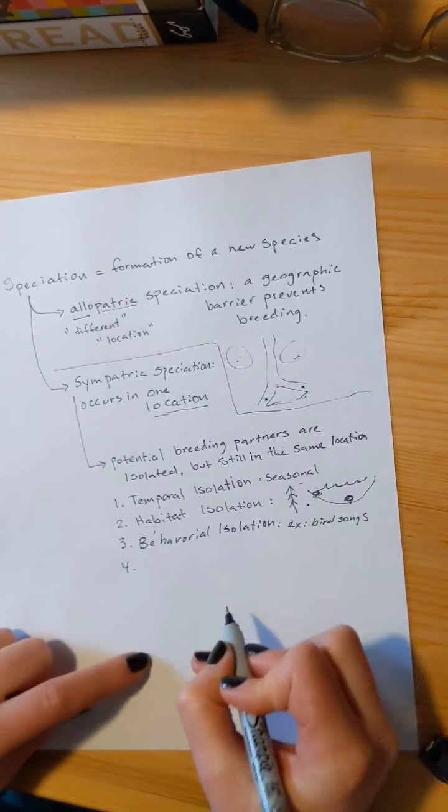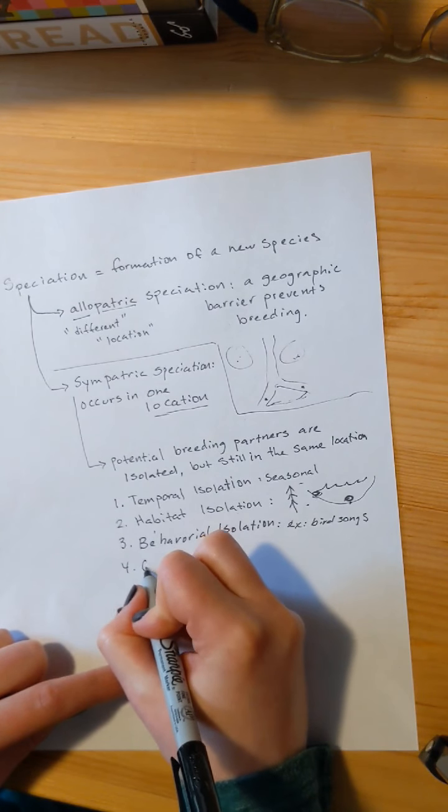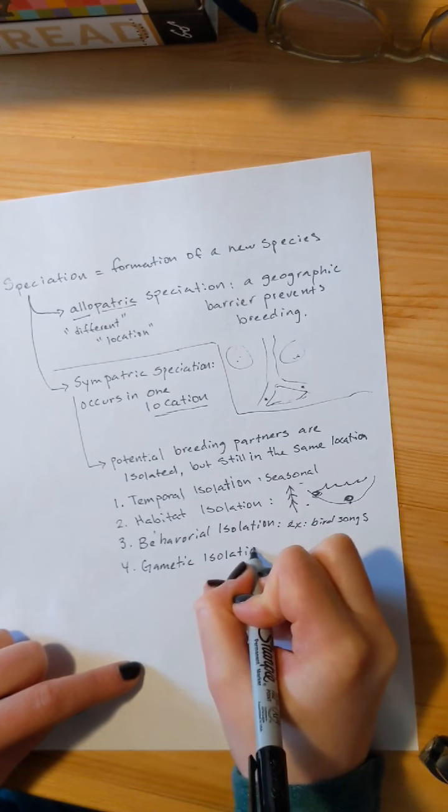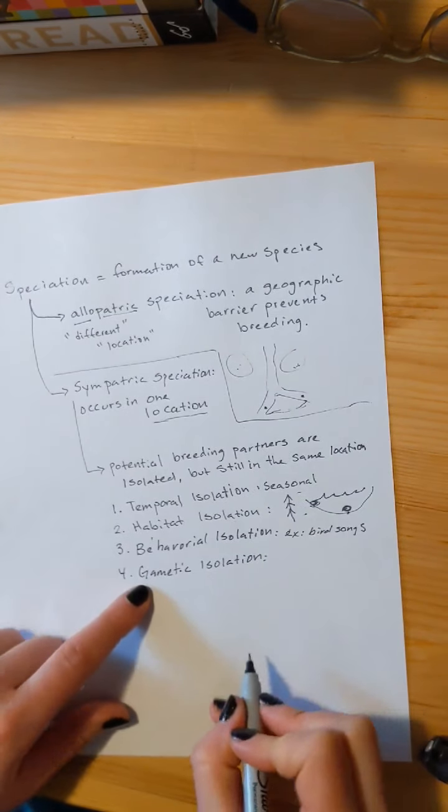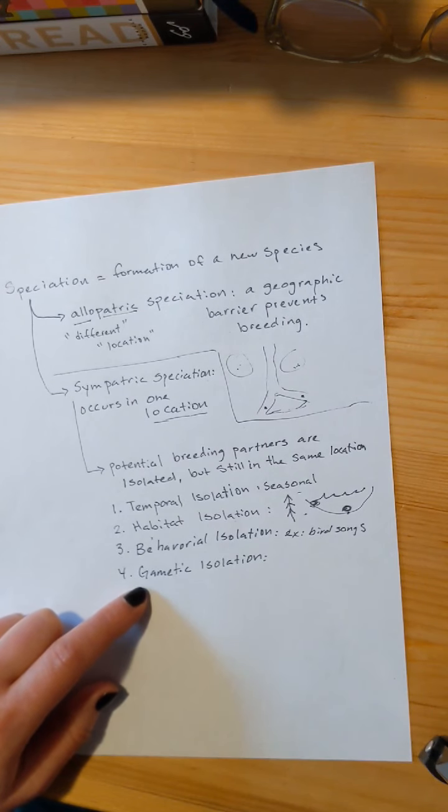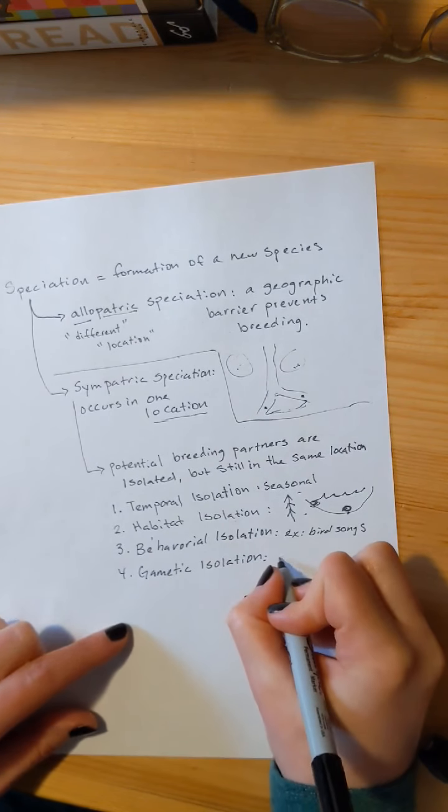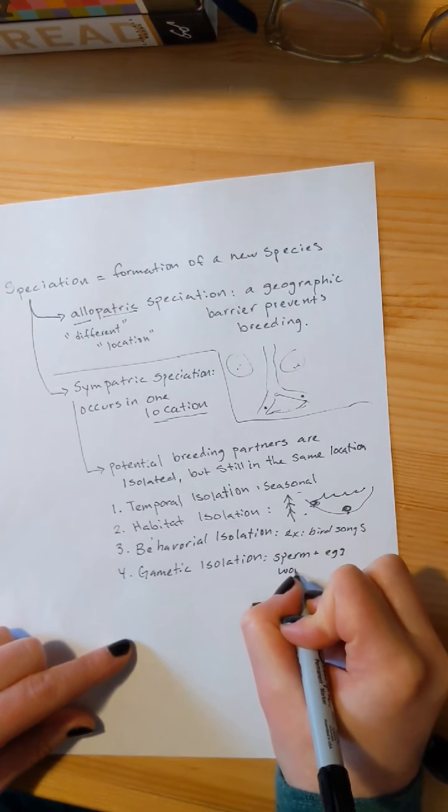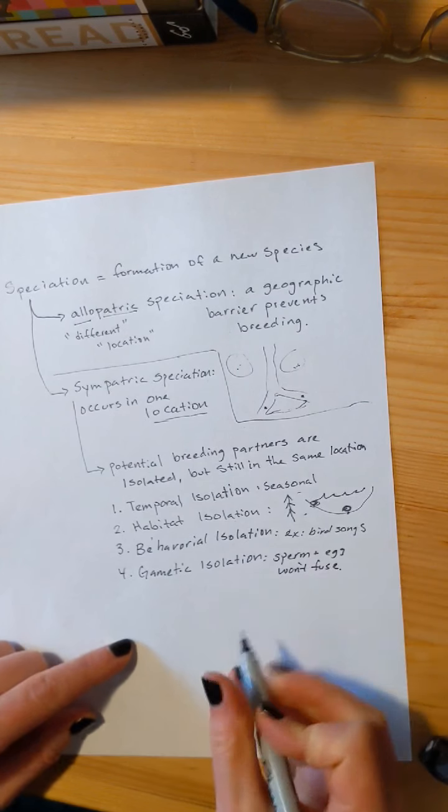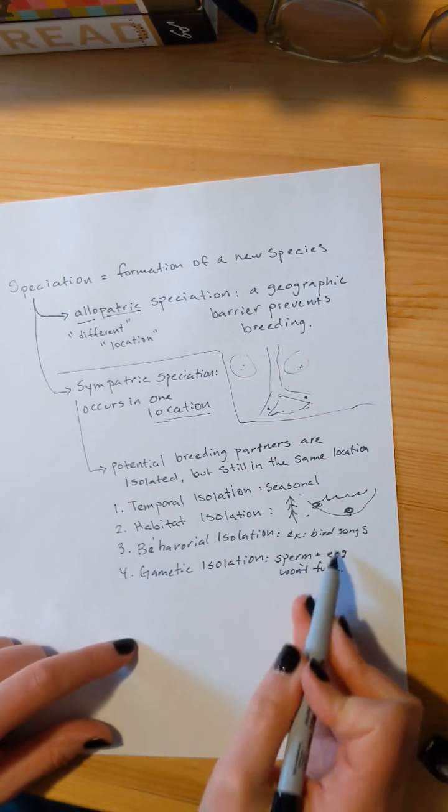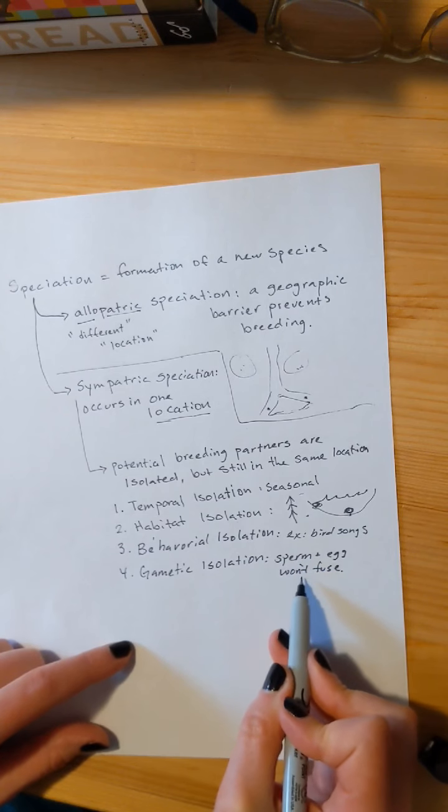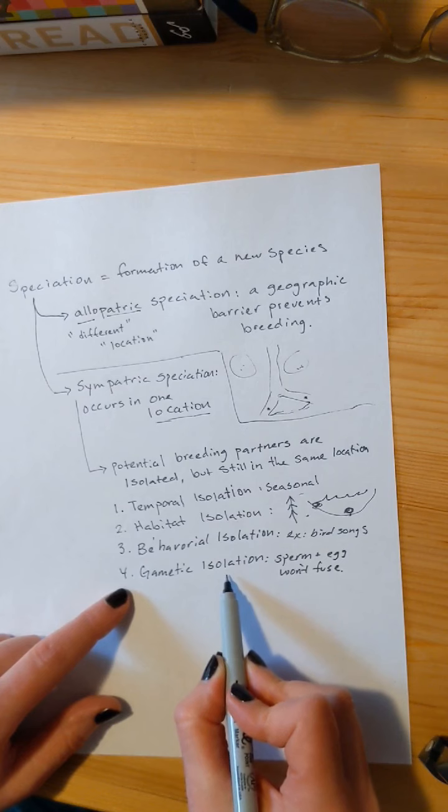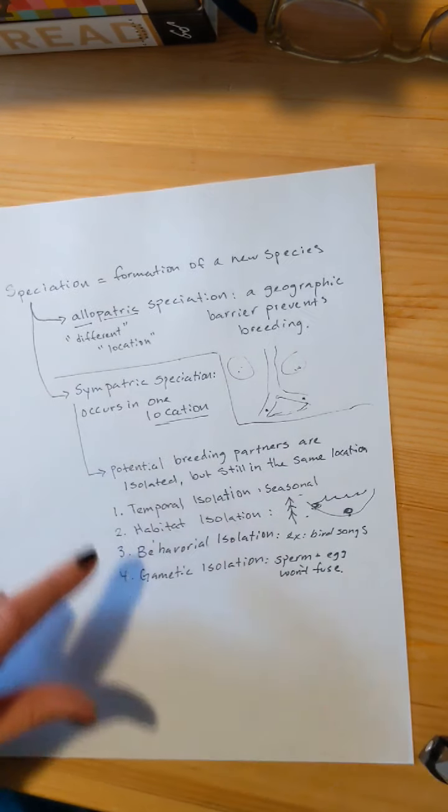So we also have gametic, which often is based on genes. That's when the sperm and the egg will not fuse at all. That means that you had a mating event, there was copulation, but it didn't produce a fertilized zygote. So they're still isolated, they're not going to be able to reproduce together, even though they're in the same location.